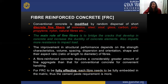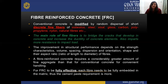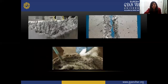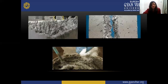The improvement in structural performance depends on the strength characteristics, volume, spacing, dispersion, orientation, shape, and aspect ratio (ratio of length to diameter) of the fibers. Fiber reinforced concrete requires a considerably greater amount of fine aggregates than conventional concrete for convenient handling. For FRC to be fully effective, each fiber needs to be fully embedded in the matrix, requiring thorough and homogeneous mixing. These are some examples of fiber reinforced concrete prepared and tested for higher performance.